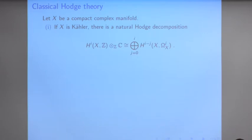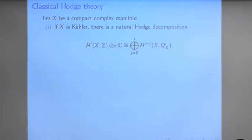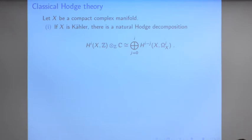The proof uses some real analysis. You compute using harmonic differential forms, which makes sense if you have a Kähler manifold, to uniquely represent all cohomology classes. These harmonic representatives also uniquely represent cohomology classes of differential forms. Putting these analytic inputs together, you get this algebraic consequence.